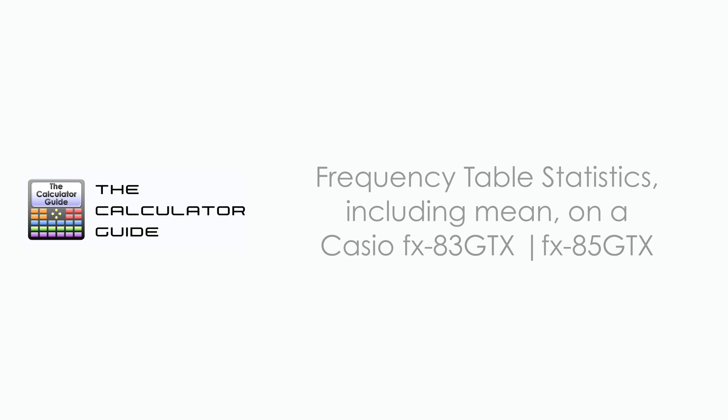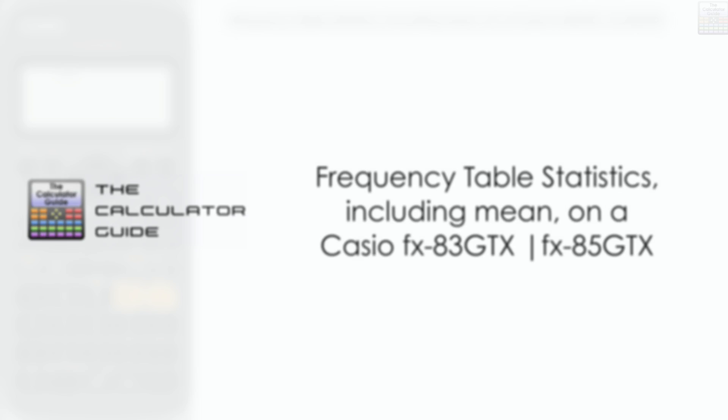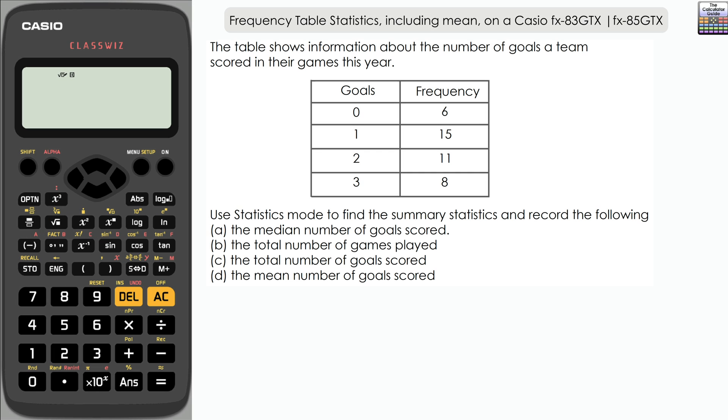Hello and welcome to the calculator guide video on frequency table statistics including mean on a Casio FX 83 GTX or 85 GTX. We have the frequency table here showing the number of goals scored by a team in their games this year. We need to use statistics mode on the calculator to find the summary statistics.